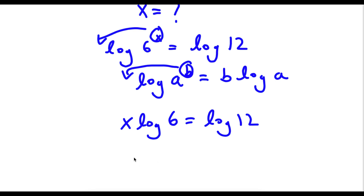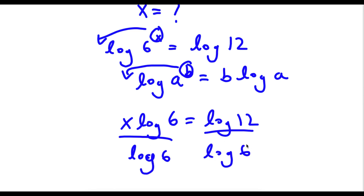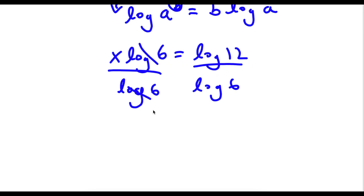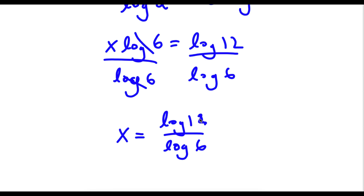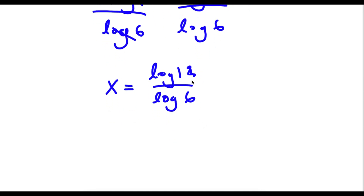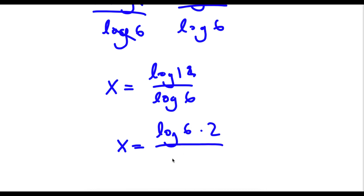And now what I'm going to do is divide by log 6 on both sides. So these two cancel out and I'll be left with x is equal to log 12 over log 6. Now log 12 is the same thing as log of 6 times 2, and I have this over log 6.